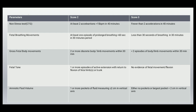For the non-stress test (CTG): score is 2 if there are at least two accelerations of more than 15 beats per minute in 40 minutes; score is 0 if there are fewer than two accelerations in 40 minutes. For fetal breathing movements: score is 2 if there is at least one episode of prolonged breathing for more than 60 seconds in a 30-minute period; score is 0 when there are less than 30 seconds of breathing in 30 minutes.